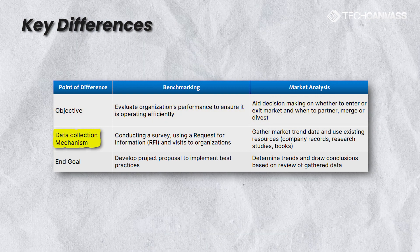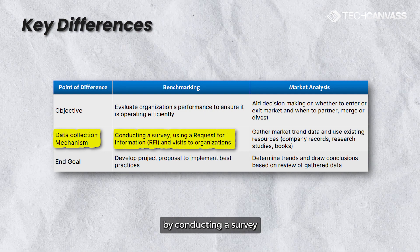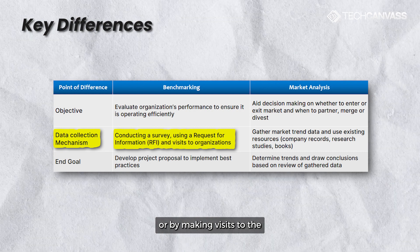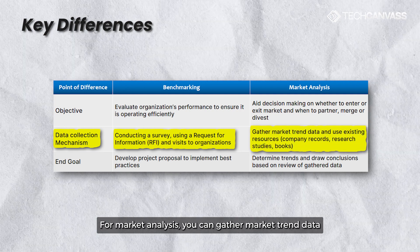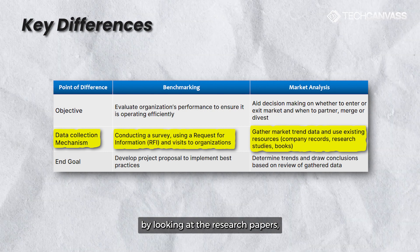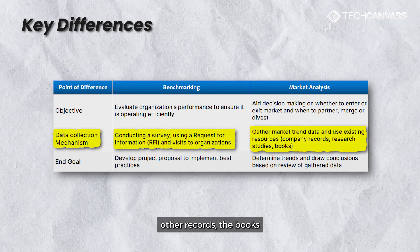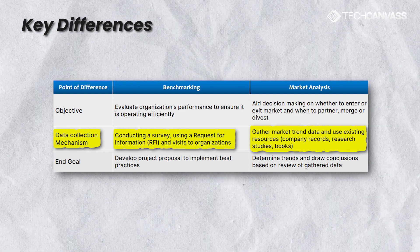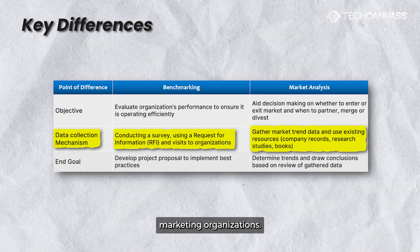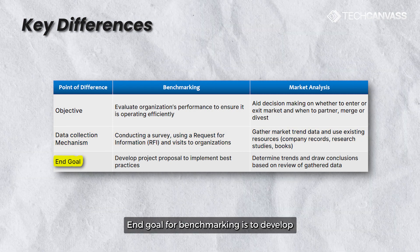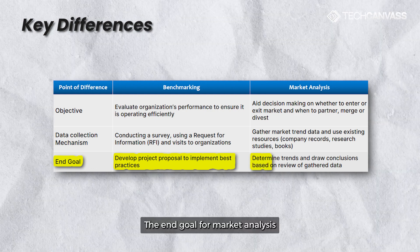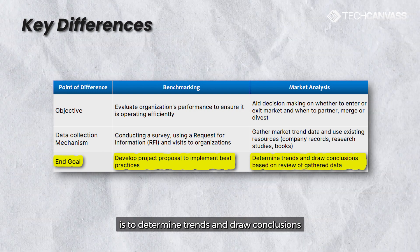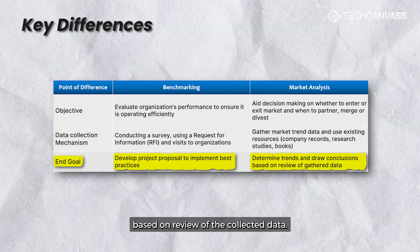Next is data collection mechanism. For benchmarking, data collection can be done by conducting a survey, using a request for information sheet, or by making visits to the organizations or competitors. For market analysis, you can gather market trend data by looking at research papers, using existing records, books and other studies conducted by various marketing organizations. The end goal for benchmarking is to develop project proposals to implement best practices, while the end goal for market analysis is to determine trends and draw conclusions based on review of the collected data.